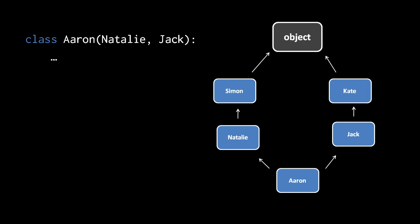Now, in the parentheses where we specify the parent class, we can actually specify more than one because Python supports multiple inheritance. It's possible for a single class to have more than one direct parent. Here, the class Aaron has two parents, Natalie and Jack, and notice they're separated by commas.